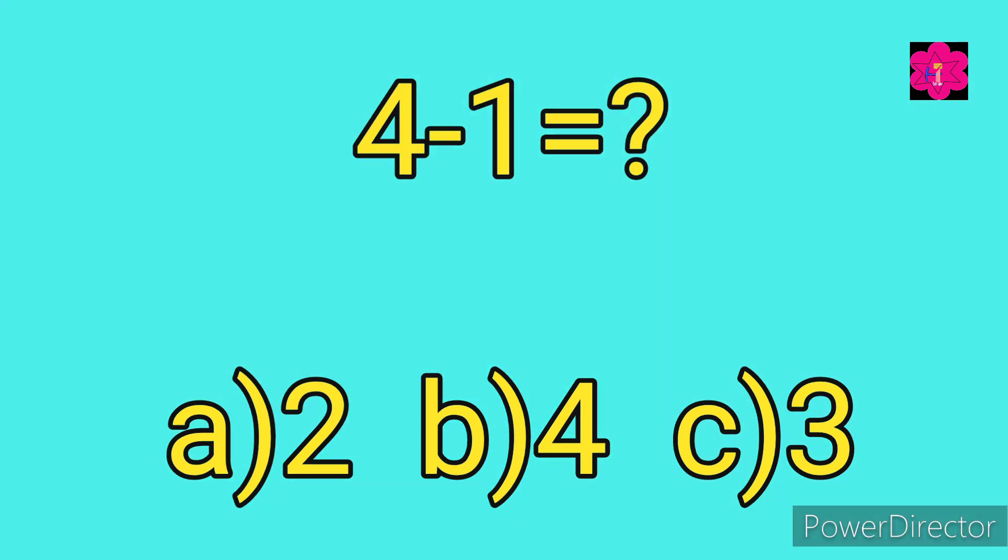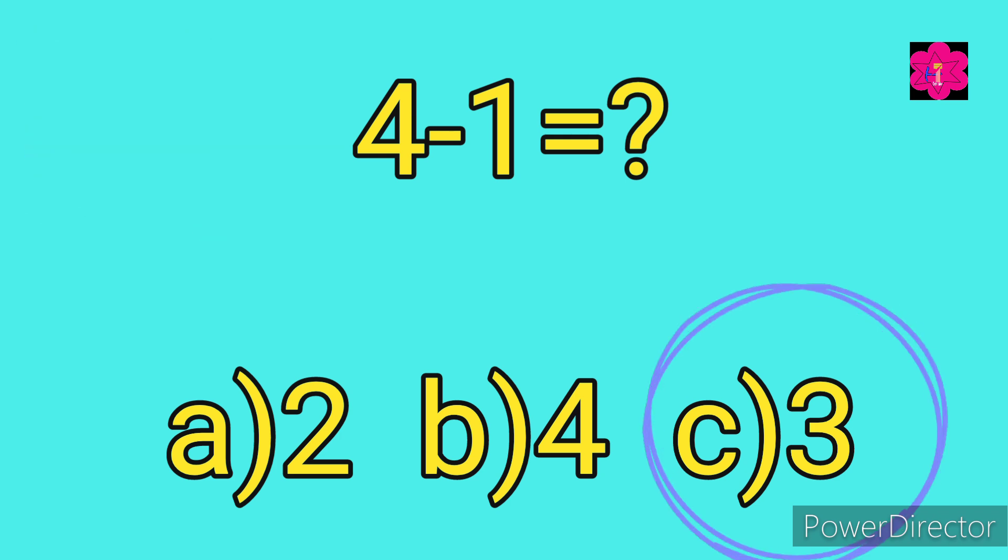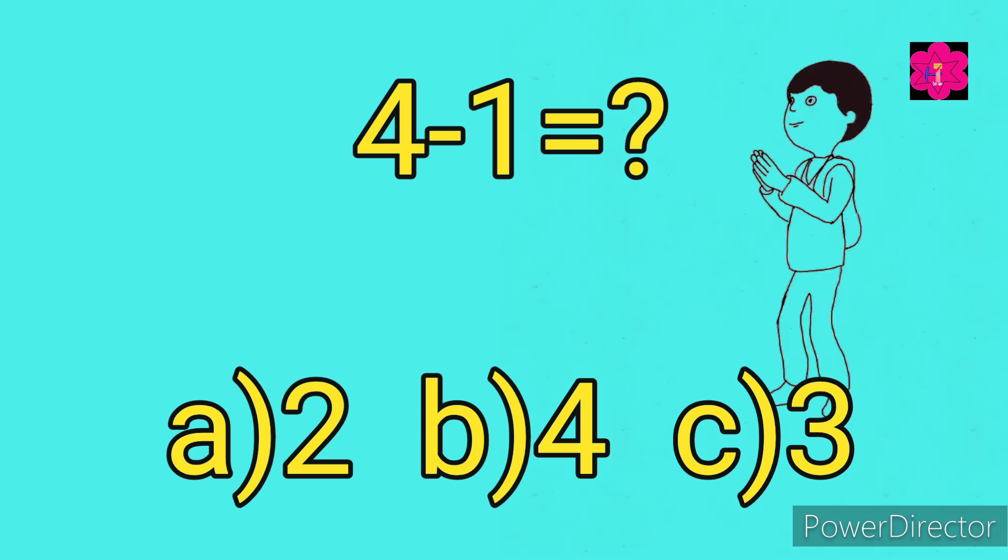What is 4 minus 1? Your options are a) 2, b) 4, and c) 3. Your time starts now. Yes, correct answer is c) 3. Fantastic job kids!